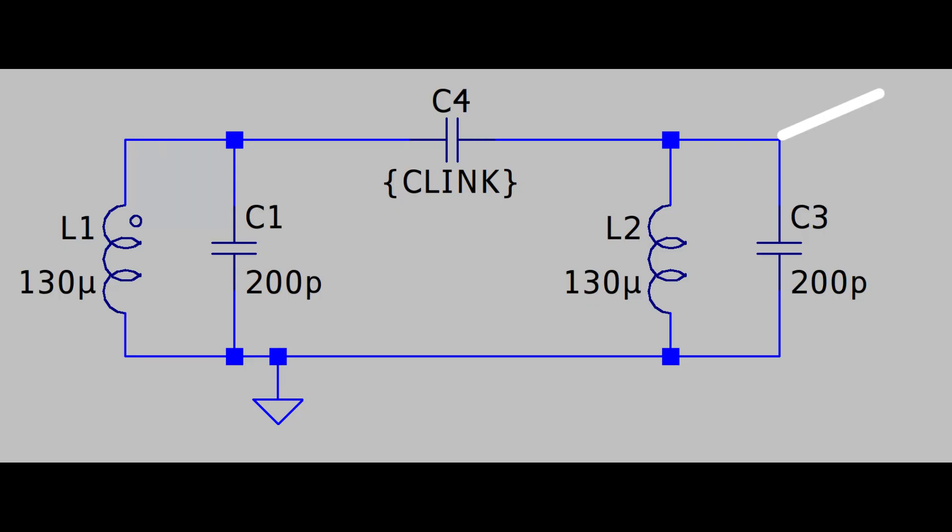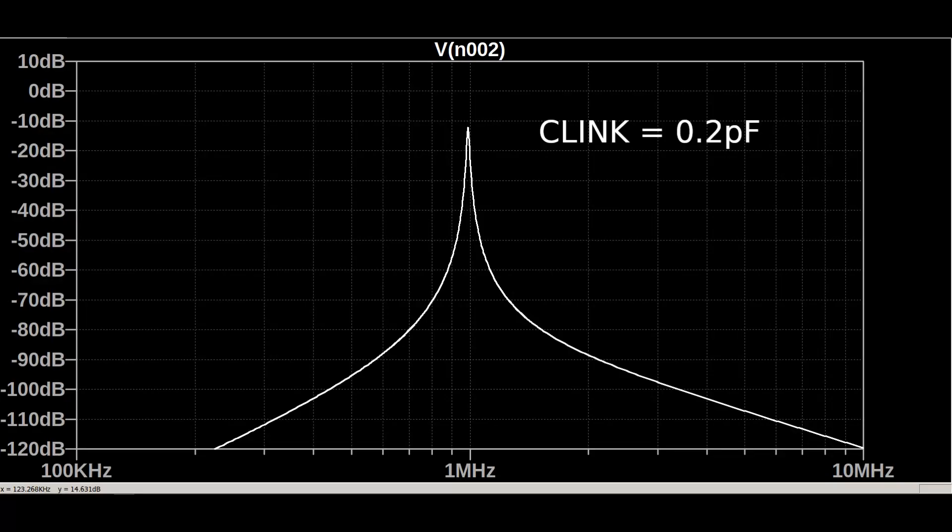Consider a circuit like this, where L1 and C1 represent the tuned antenna, and L2 and C3 represent the crystal radio's tuned circuit. C4 is a small value capacitor that is linking the two together. If we set the value of C4 to be 2 tenths of a picofarad, and then plot what we would see for amplitude versus frequency on L2, we will get a graph that looks like this.